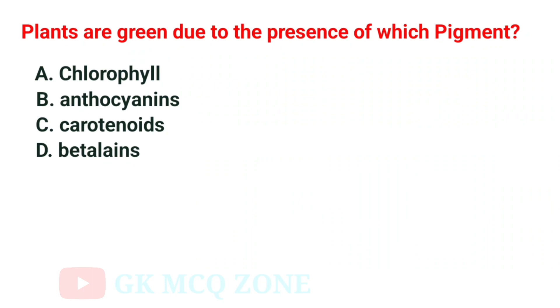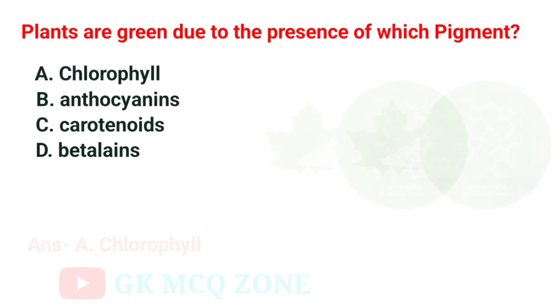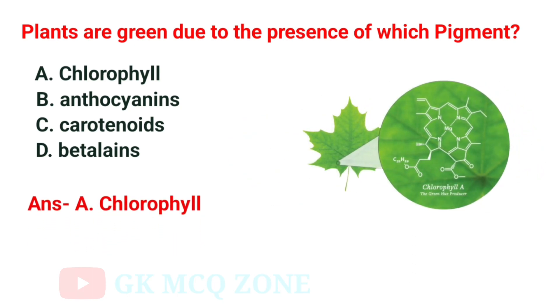Plants are green due to the presence of which pigment? The correct answer is Option A: Chlorophyll.